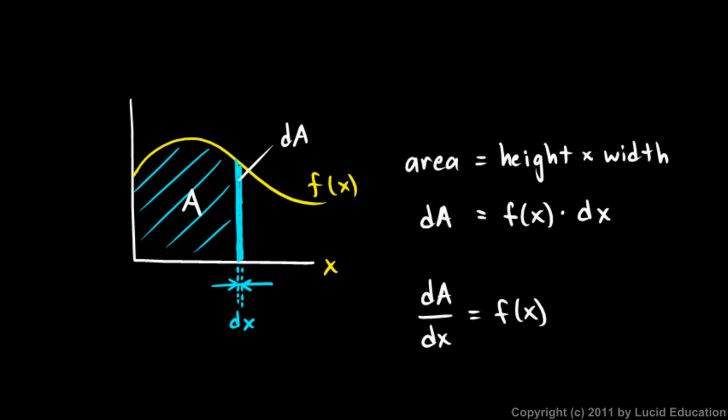How about that? That the derivative of the area function is f(x), my original function. And that is pretty cool. If the derivative of the area function is f, then we can say that the antiderivative of f is the area function. And that reasoning right there will apply to any differentiable function.